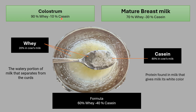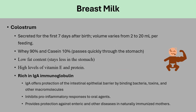The easiest and fastest to digest is colostrum, followed by mature breast milk, then formula which is 60% whey and 40% casein. It is contraindicated to give regular cow's milk in the first year of life. Breast milk is the best milk for any infant in the first year of life. Colostrum is the first milk, secreted in the first 7 days after birth, with a volume varying from 2 ml to 20 ml per feeding.